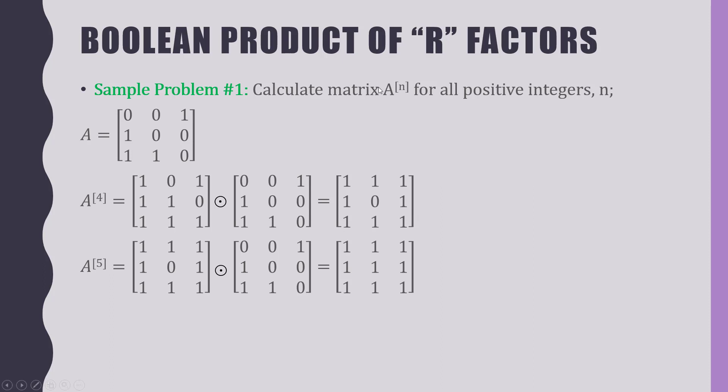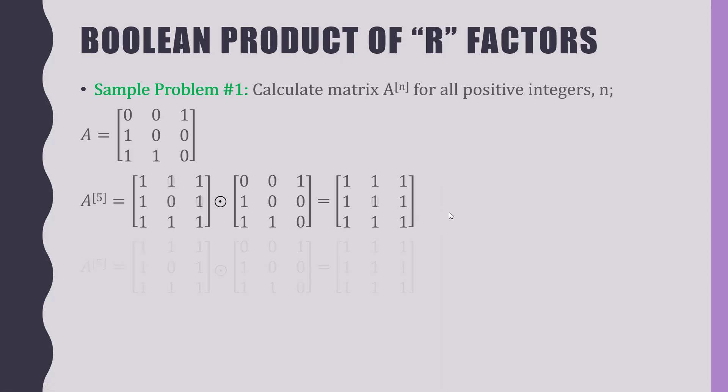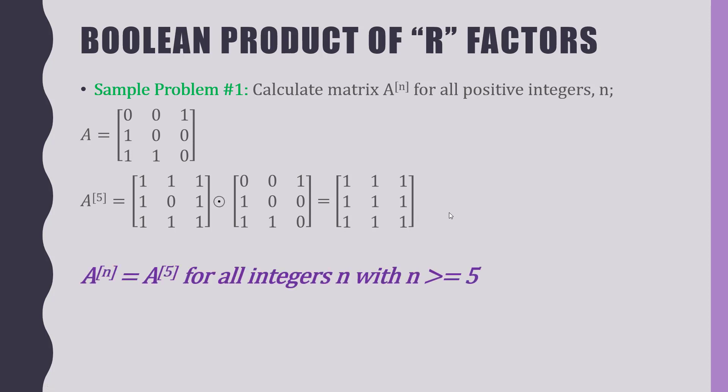So the answer to A to the n for all positive integers n is: A to the 5th for all integers n with n greater than or equal to 5. We know A¹ is the original matrix, A², A³, A⁴ were on previous slides, and A⁵ is on this slide. So for n = 5, 6, 7, 8 through infinity, the answer is this all-ones matrix. Those five matrices together are the complete answer for all positive integers n.